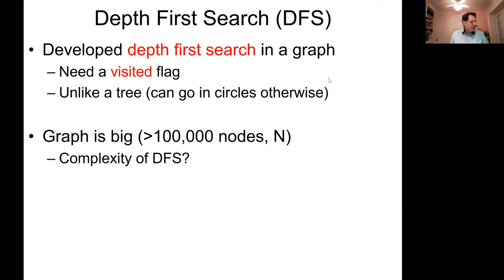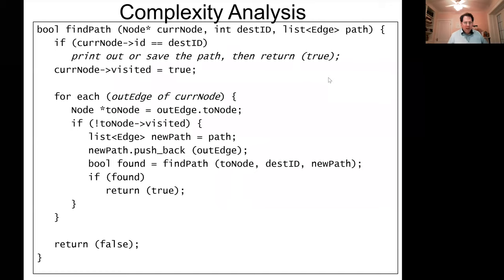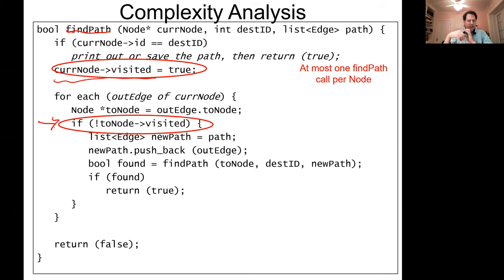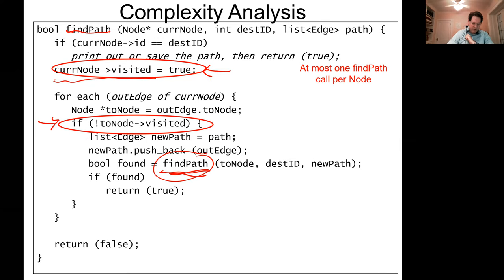Isadora is saying that if the number of edges per node is bounded — say four, which is typical for a city — then it's going to be order N. And that's exactly right. We can only call find-path or the recursive function once per node. Once we hit a node, we mark its visited flag to true, and we will never do any real work for it again. We don't make any more recursive calls if a node has already been visited.